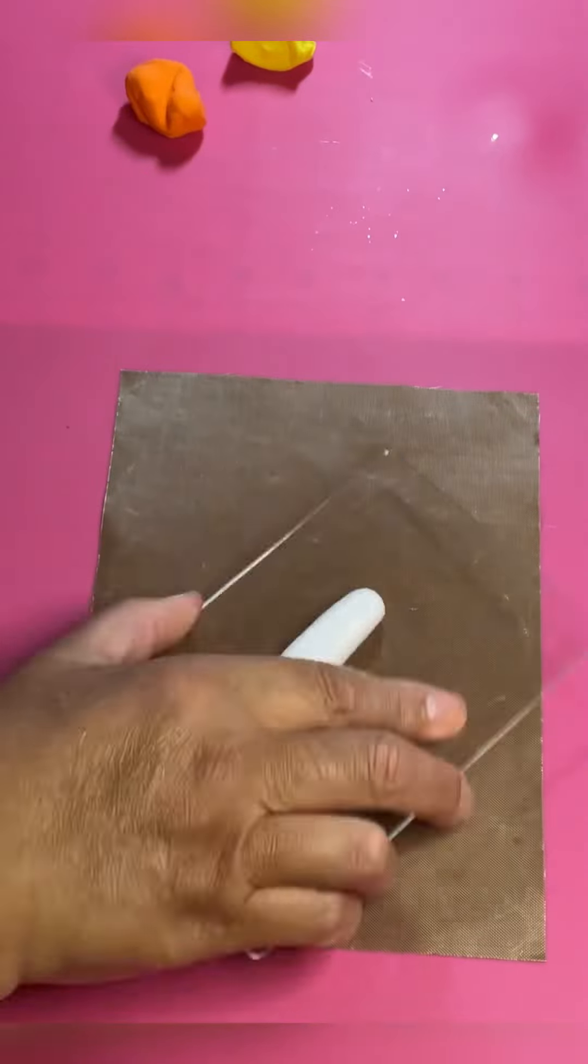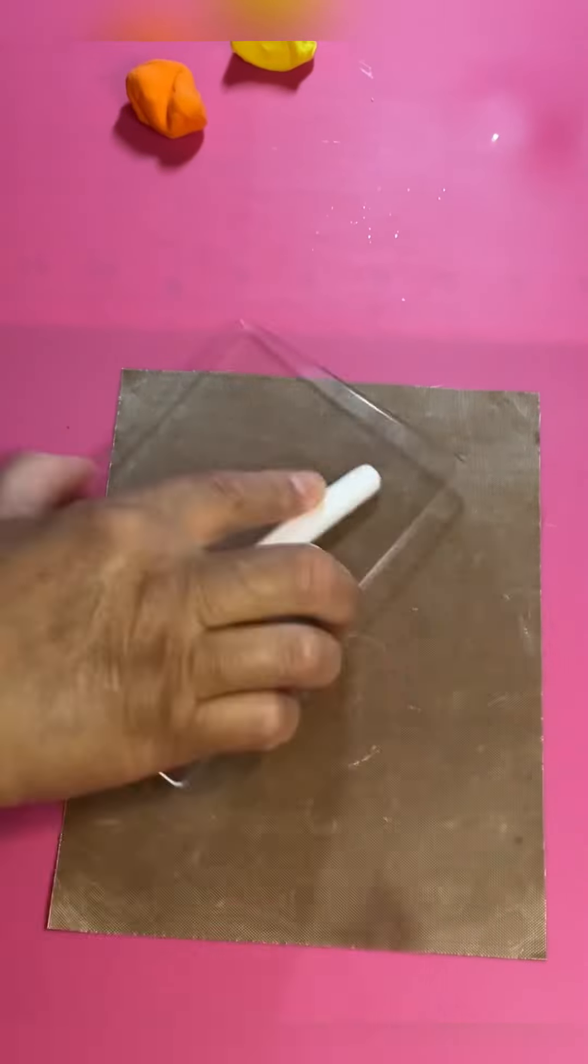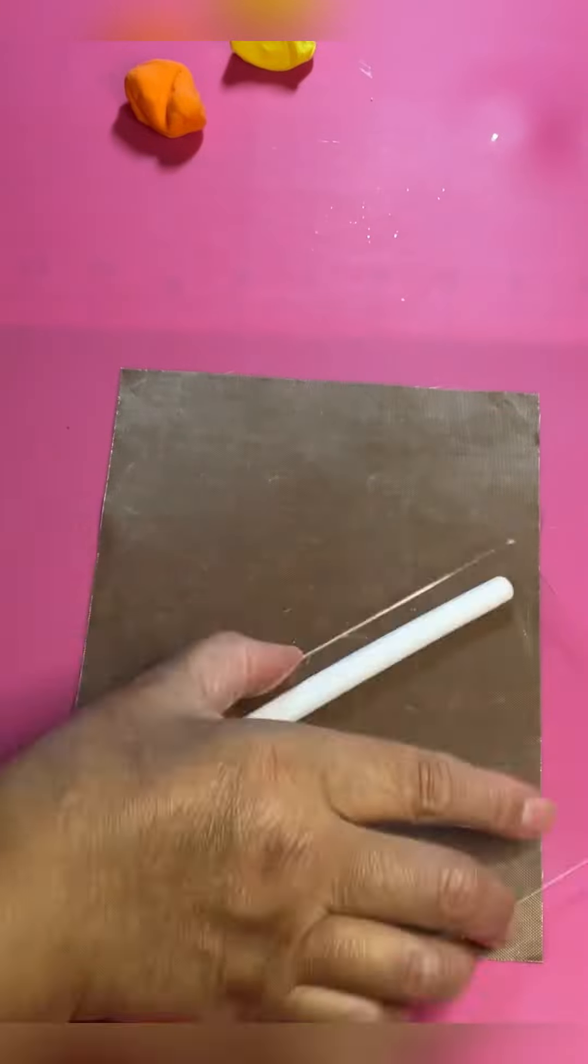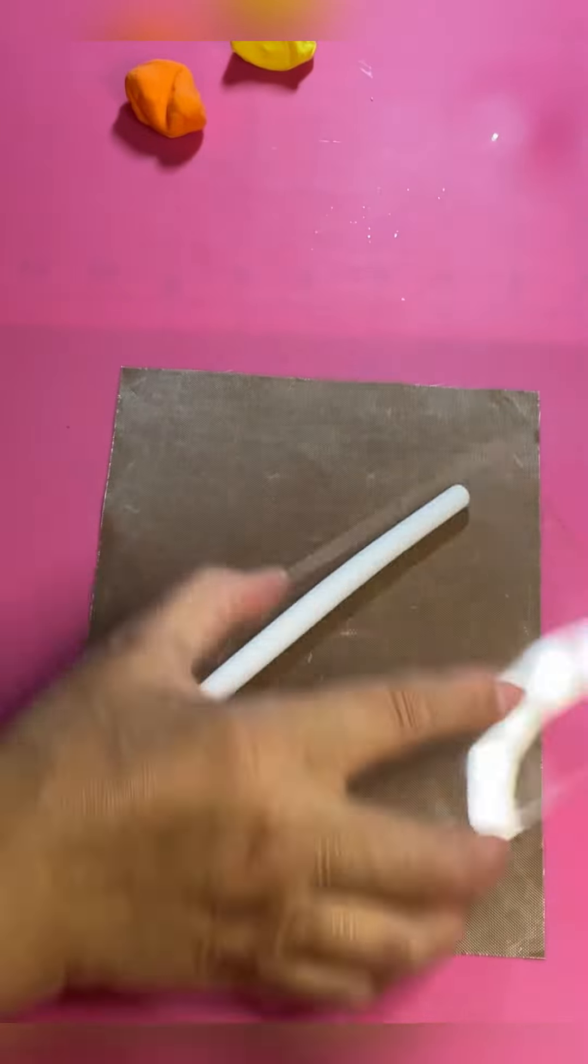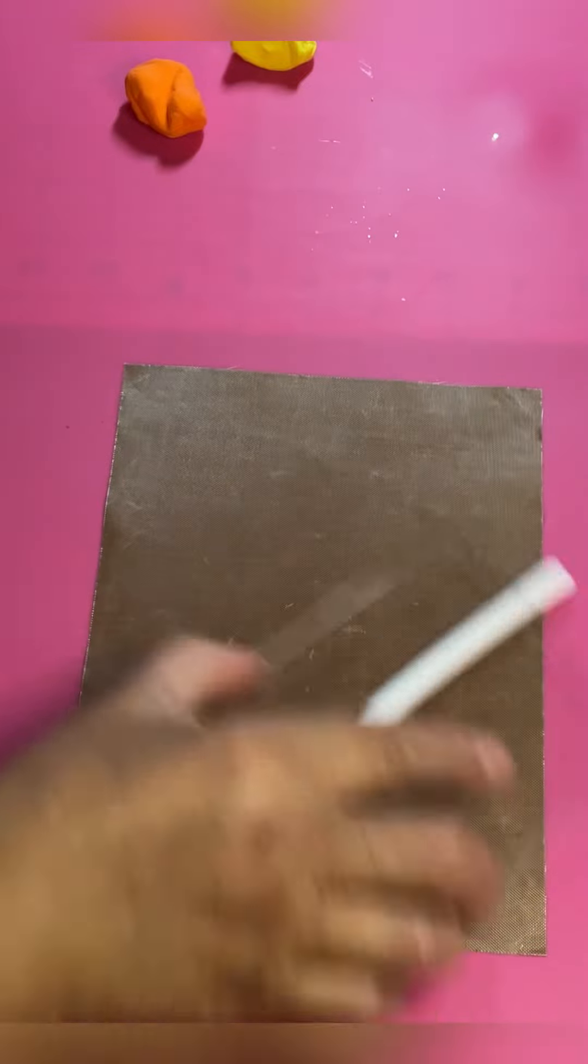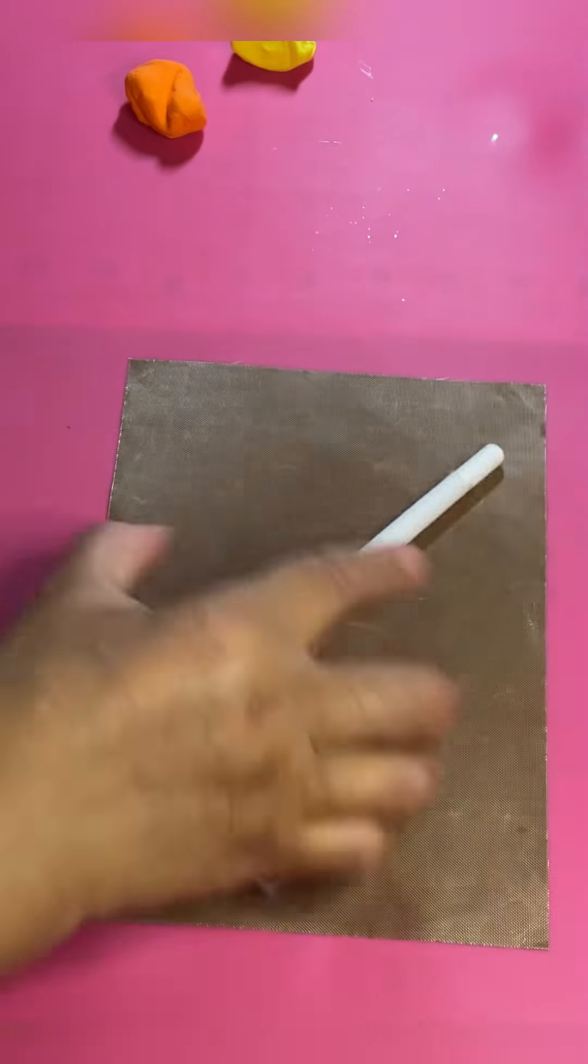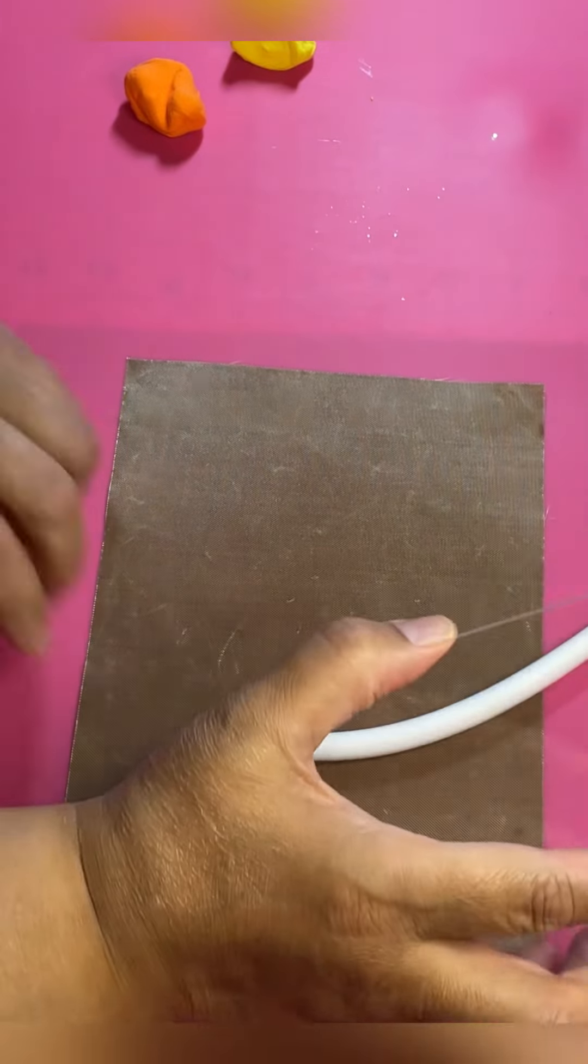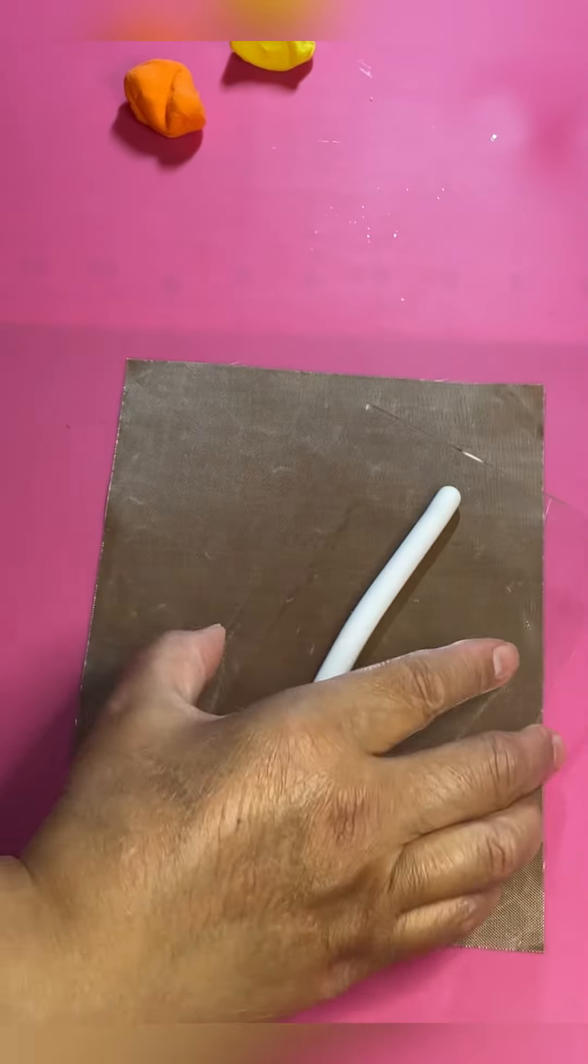You're going to need some white clay, some orange clay, and some yellow clay. I have an acrylic block here that I'm using to roll out my logs. I'm really bad at rolling out logs, so I use this little piece of plexiglass type thing. You can find it on Amazon.